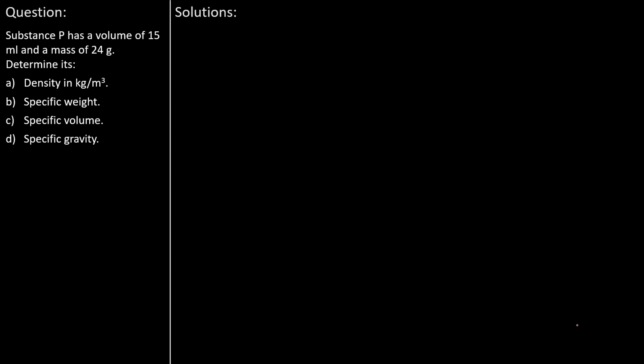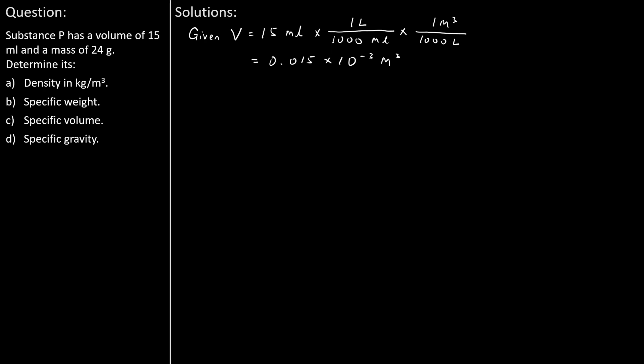The question states that substance P has a volume of 15 millilitres and a mass of 24 grams. We are asked to determine the density, specific weight, specific volume, and specific gravity for substance P. From the question, volume V equals 15 millilitres, which we convert to 0.015 times 10 to the power of minus 3 cubic metres. The mass of 24 grams is converted to 0.024 kilograms.